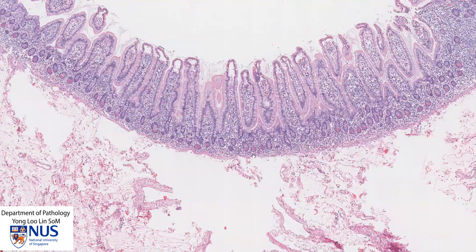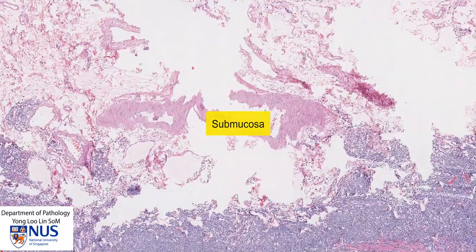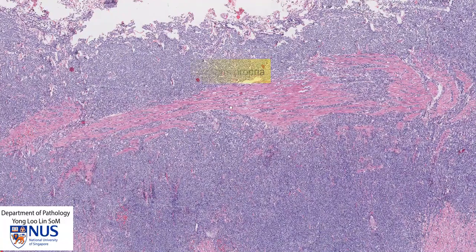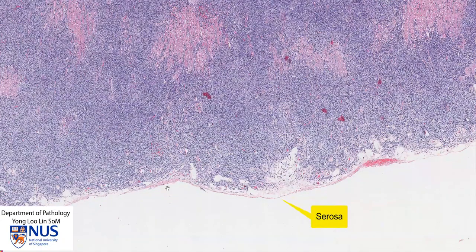Just deep to the mucosa, we have the thin muscularis mucosae layer, which is the smooth muscle layer, and then we have the submucosa and the muscularis propria. We can still see some smooth muscle bundles here, but this is very much infiltrated by lymphomatous cells. And then, of course, we have the serosa.